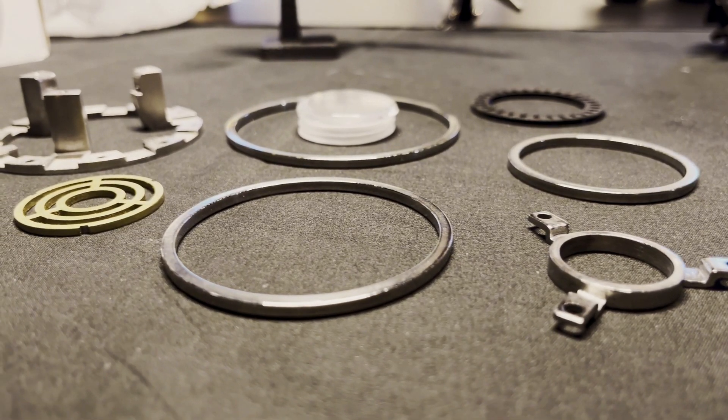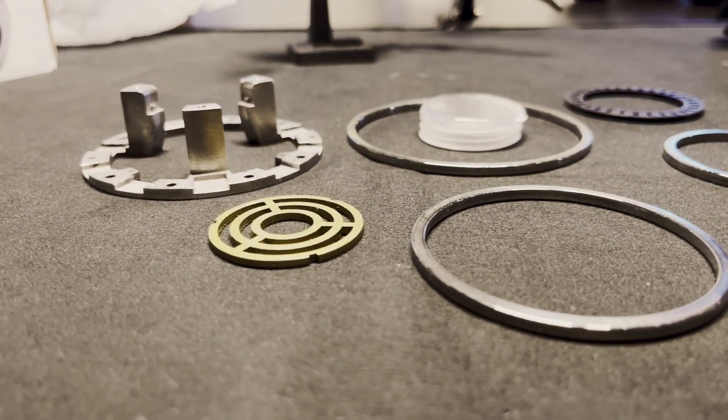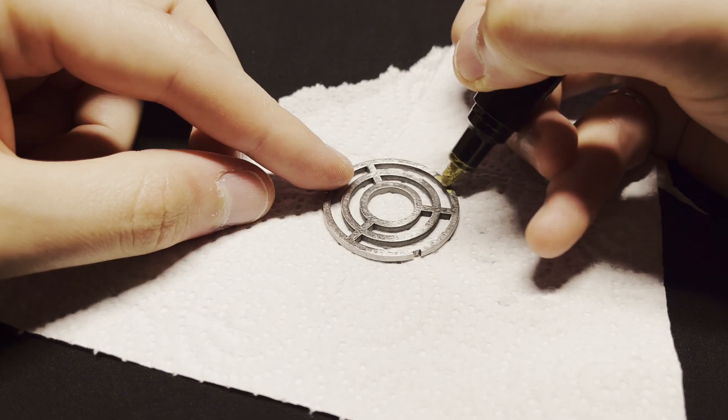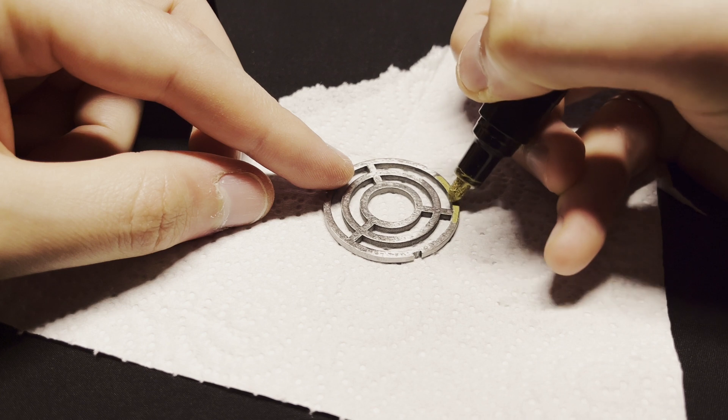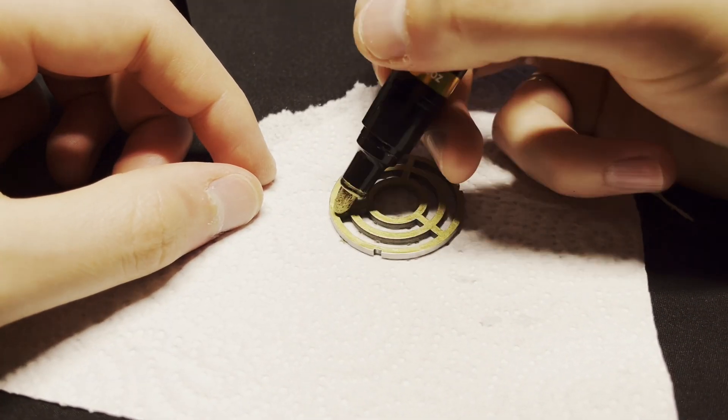Here are all the stainless steel parts after I spent the time wet sanding them with 2000 grit sandpaper and polishing them. I also used a gold paint pen to color this middle grate piece. This isn't required but I wanted my arc reactor to look as movie accurate as possible.